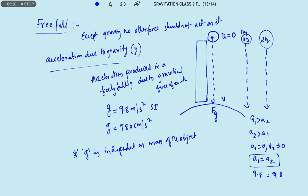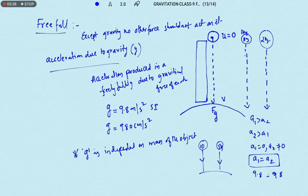Most students get confused on this point. Two bodies are given — one is 10 kg and another is 5 kg. Which body will be accelerating towards the earth with greater acceleration? The answer is: both bodies will be accelerating towards the ground with the same acceleration.